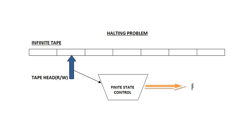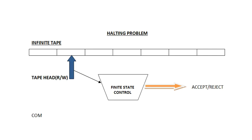We also have a finite state control that generally manages the computation and produces an output — either accept or reject. That is the final output. This is nothing but the result of the computation performed by the Turing machine. Now let us look at what kind of computations are being performed.